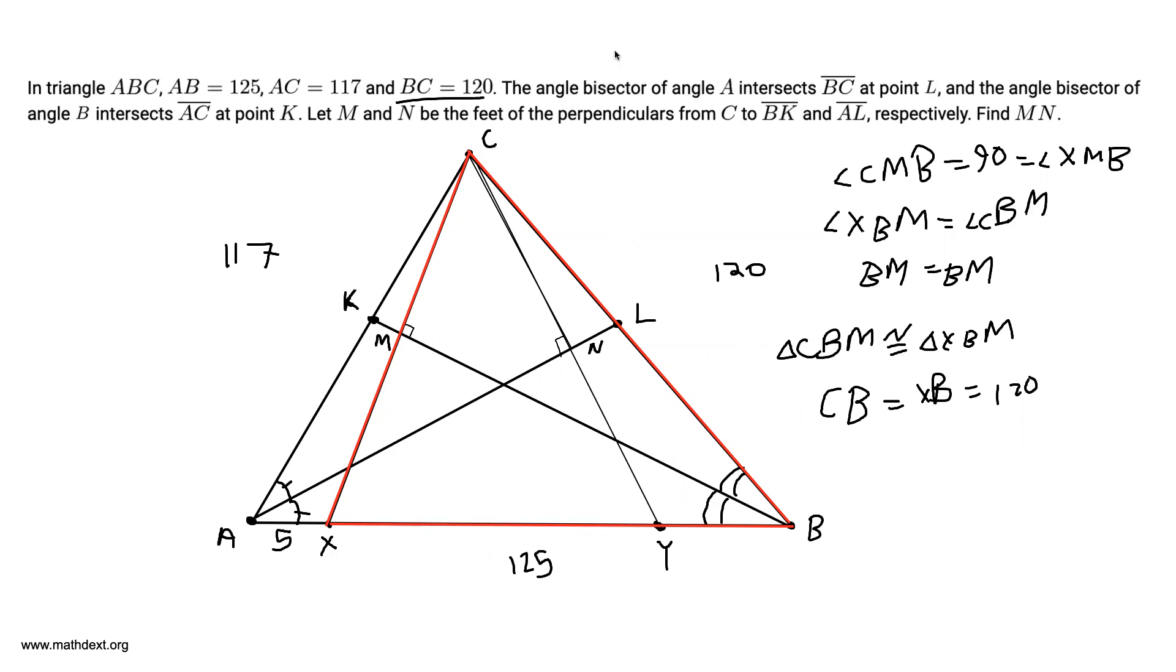And similarly, we can find that triangle ACY is also isosceles for the same reasons. CN is perpendicular to AN. We also have angle CAN equal to angle YAN. So triangle ACY is isosceles.